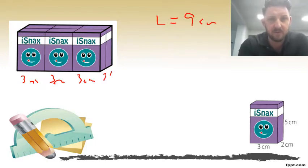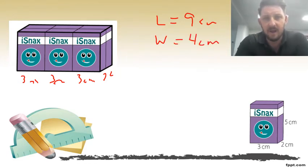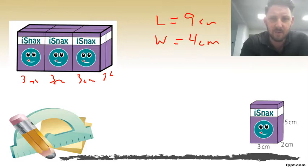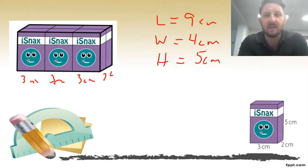We then know that our width — we have two here and two here — so our width is four centimeters. Then we look at our height and we know that one of these is five centimeters, so my height is five centimeters.